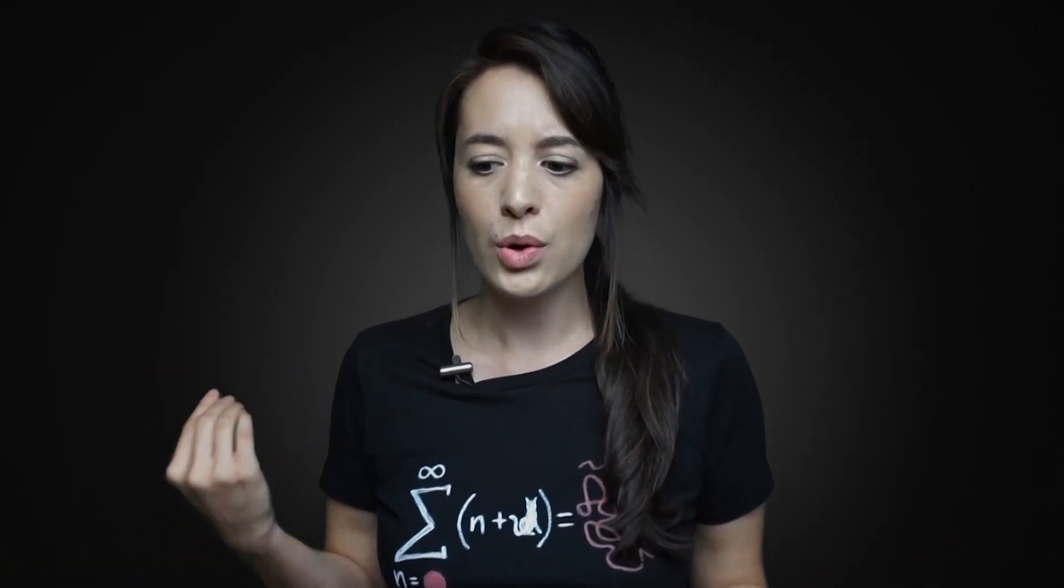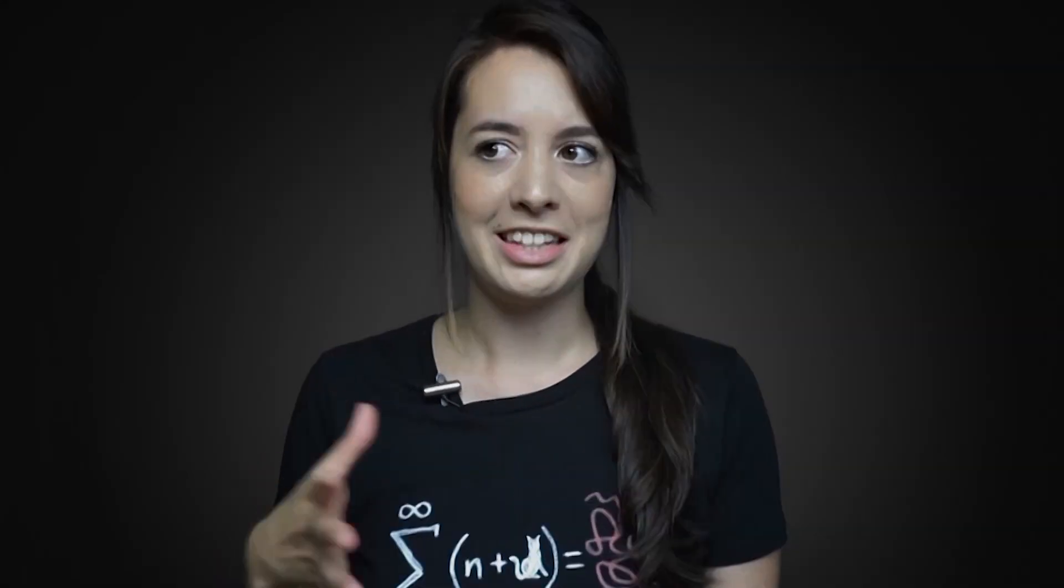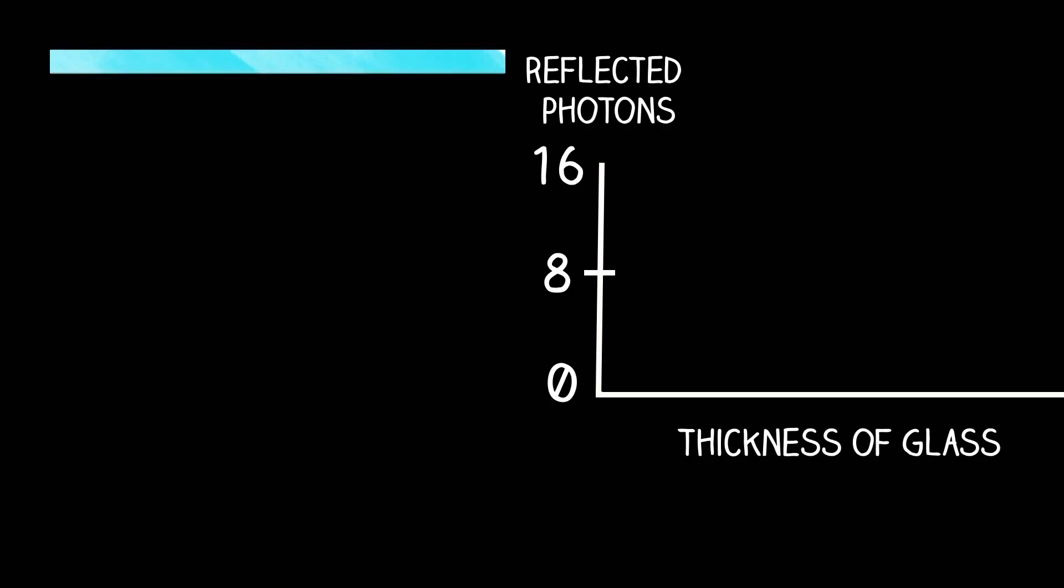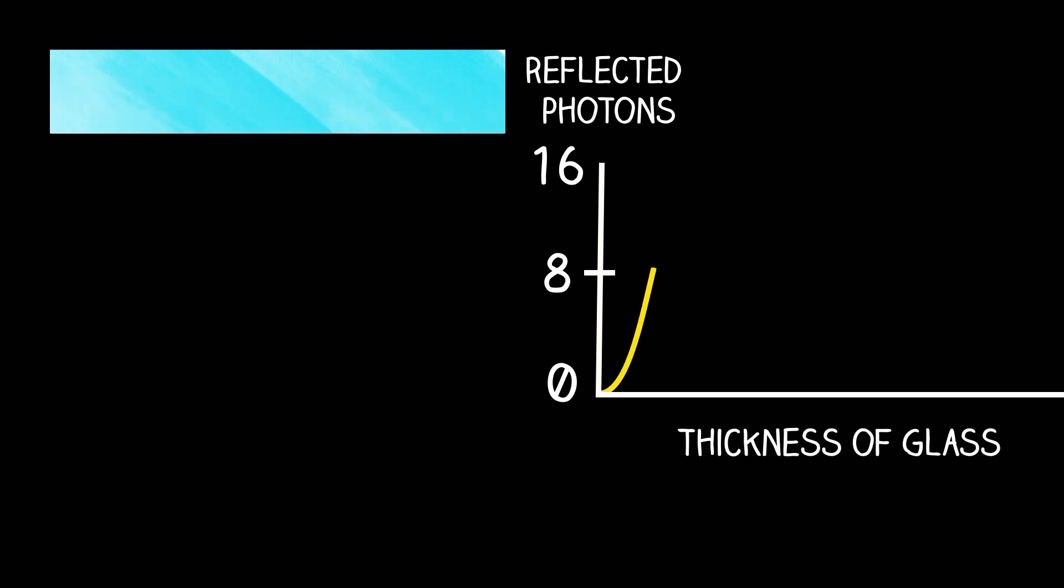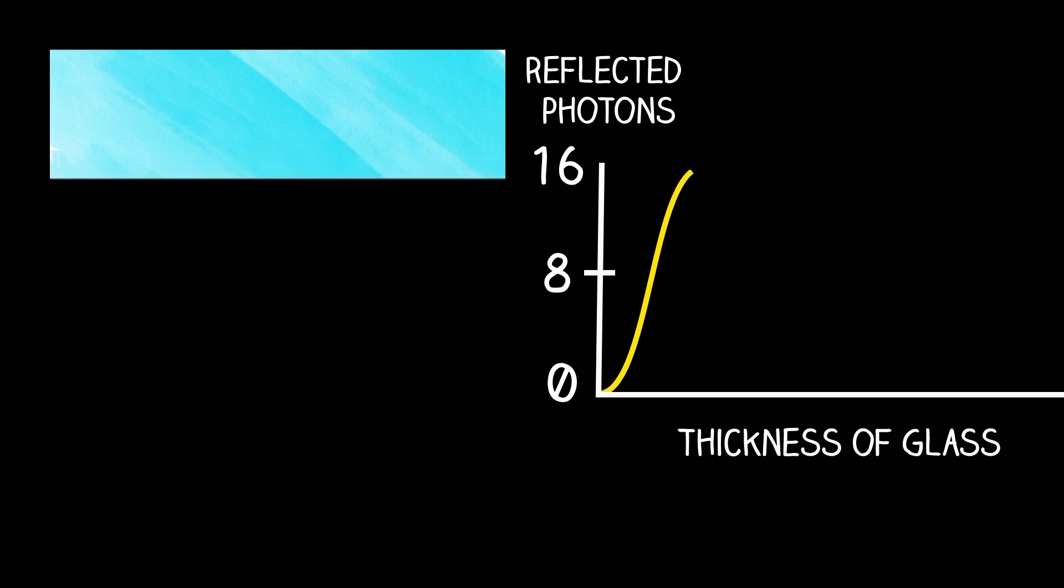So what happened to those 4 photons? Did they somehow know about the other surface? But it gets weirder. As the glass got thicker and thicker, the number of reflected photons changed from nothing at all to a maximum of 16.